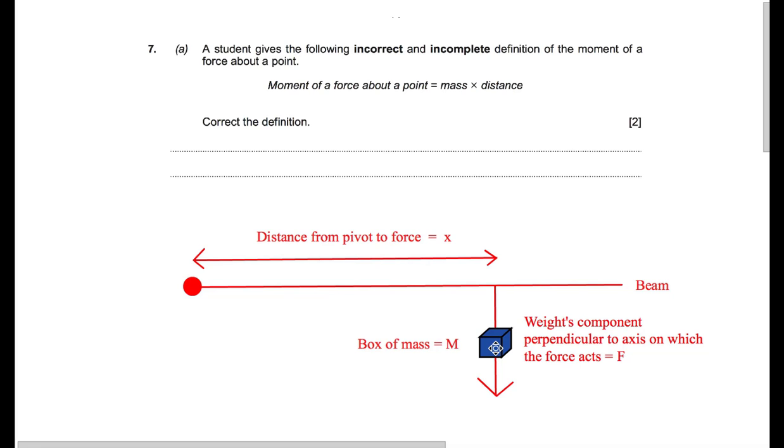So according to our definition of moments, the weight of the box times by the distance from the pivot, x, should be equal to the moment. So let's write that down.